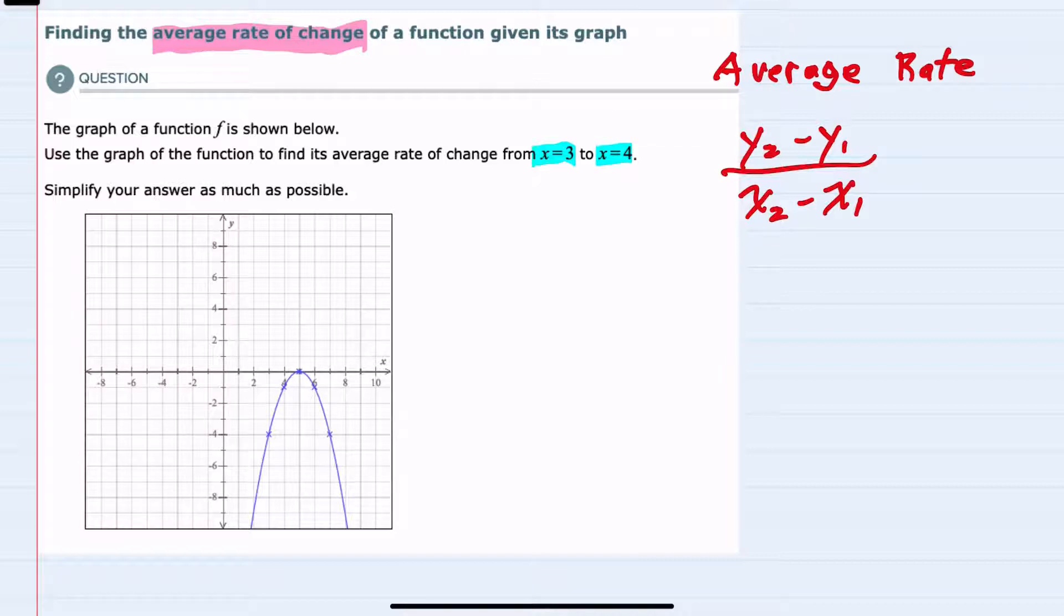Looking at our graph, when x equals 3 we have this point which is located at (3, -4), and the second point when x equals 4 is here which has the coordinates (4, -1).